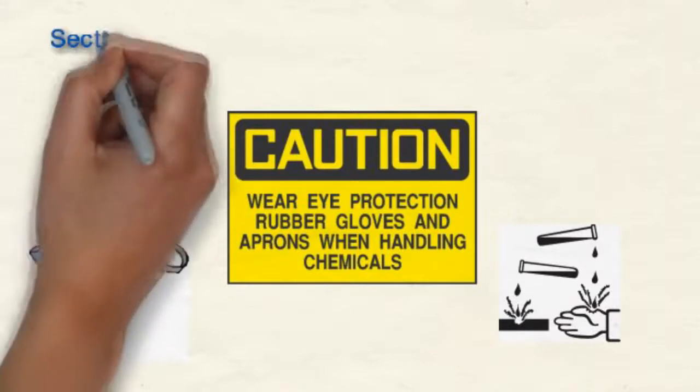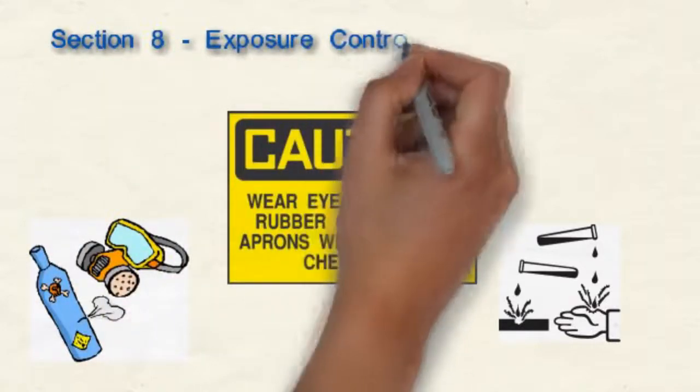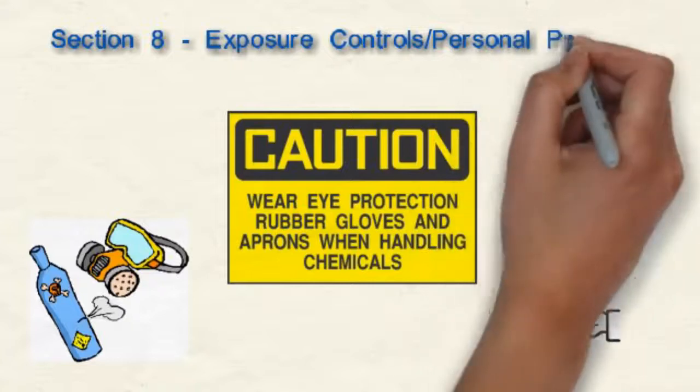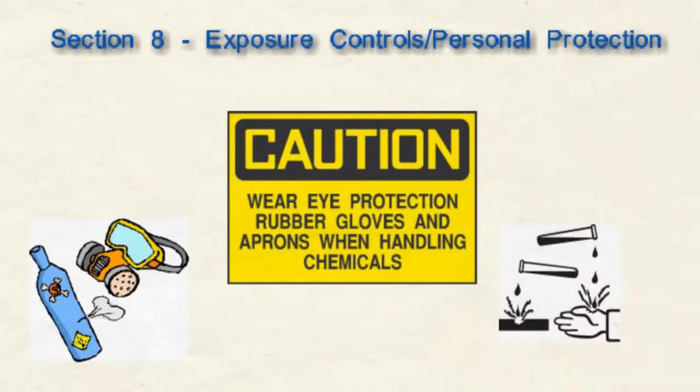Section 8, Exposure Controls, Personal Protection, tells us what we need to do to engineer a safe environment when using the chemical.